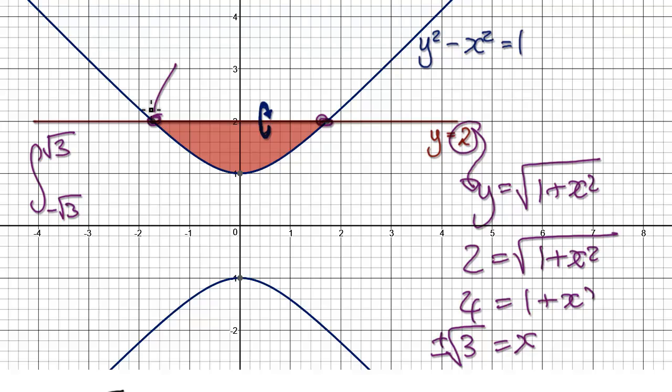But rather than doing it from here to here, because it's symmetrical, let's do it from 0 to positive square root of 3. So our volume would be 2 times from 0 to positive square root of 3. So rather than doing this, it's easier to do it from 0 to here and then later times 2, because it's symmetrical.